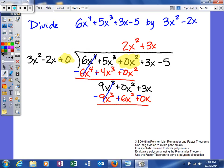When you add these together, you get 6x squared plus 3x. Then lastly, we'll bring down the negative 5. Again, what do I have to multiply this by to give me this? And that answer is a positive 2.